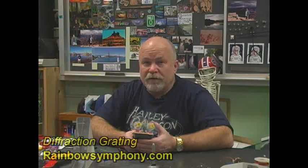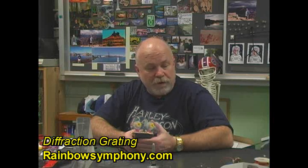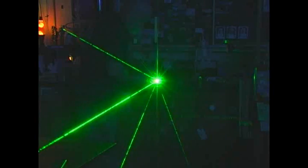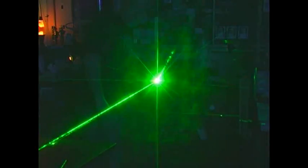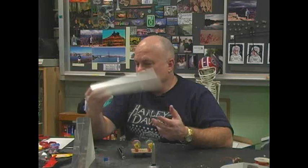You can get diffraction gratings from rainbowsymphony.com. You can buy the glasses or sheets of the material. If you get sheets, you can cut it to your own size. I cut it into circles using a button maker circle cutter.